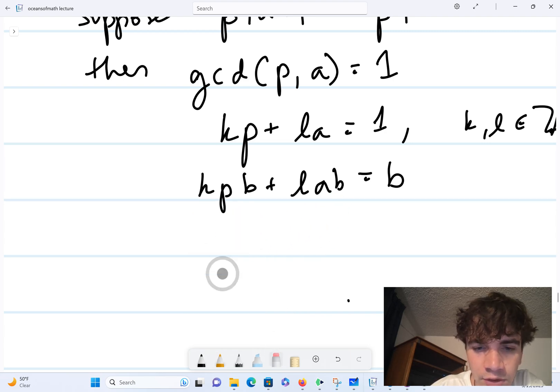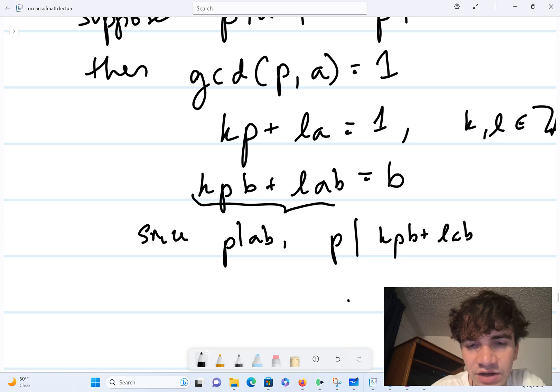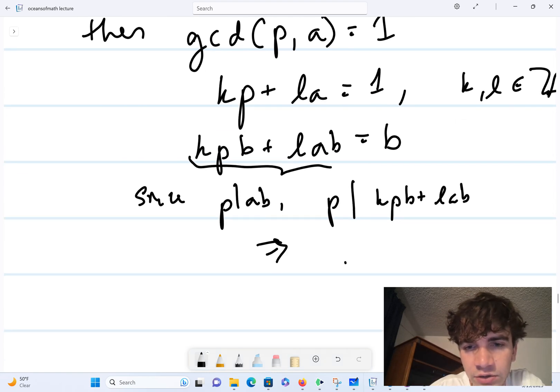Since p divides ab by assumption, we know that p divides kpb plus lab—basically the entire left-hand side of this equation. And so therefore we conclude that p divides b. All right, so that proves the lemma.